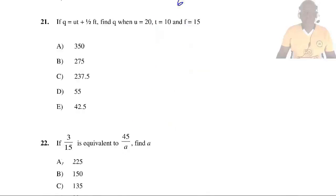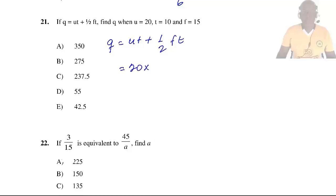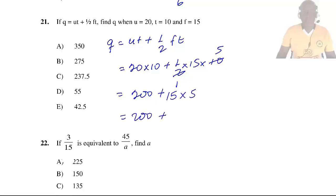Question 21: If Q = UT + ½FT², find Q when U = 20, F = 15, and T = 10. Substituting: Q = 20 × 10 + ½ × 15 × 10² = 200 + 75 × 10 = 200 + 750. Wait — Q = 200 + 75 = 275. So the answer is B.